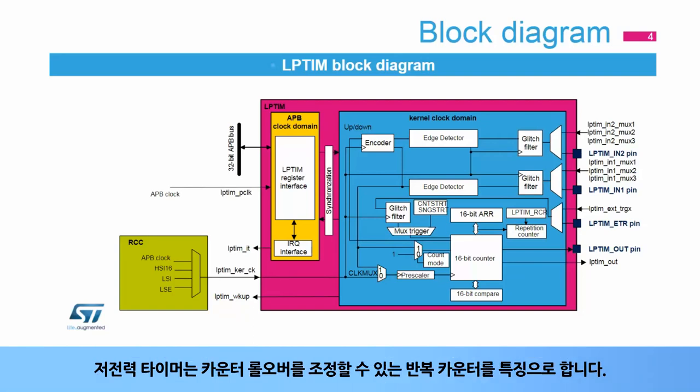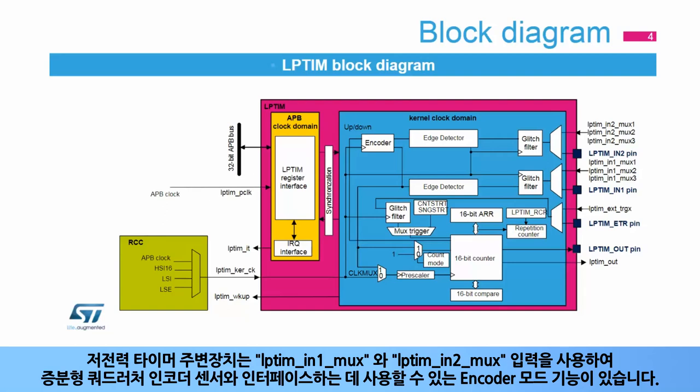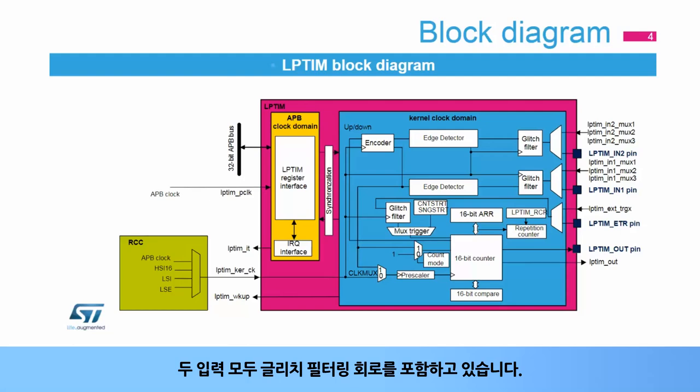The low power timer features a repetition counter, which allows adjustment of the counter rollover. It also features an encoder mode function that can be used to interface with incremental quadrature encoder sensors using the peripheral's LP-TIM-IN1-MUX and LP-TIM-IN2-MUX inputs. Both inputs feature glitch filtering circuitry.